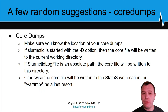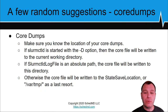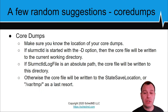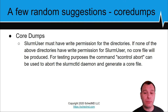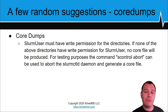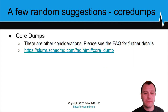Regarding core dumps: we hope you never get one, but should you, know the location of your core dumps. If slurmctld is started with the -d option, core files will be written to the current working directory. If the slurmctld log file is an absolute path, core files will be written to that directory; otherwise they go to the state save location or /var/tmp as a last resort. Make sure the core dump location is accessible by the Slurm user with write permission. For testing purposes, the command scontrol abort can be used to abort the Slurm control daemon and generate a core file.